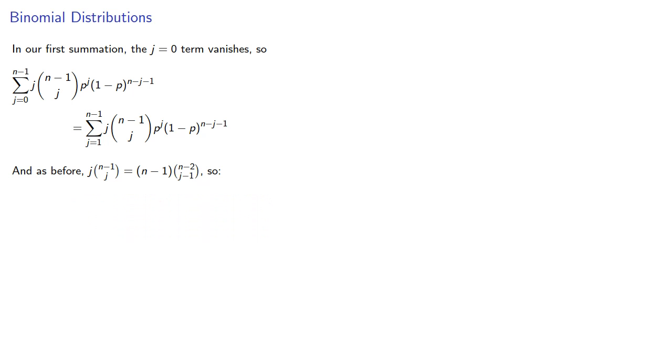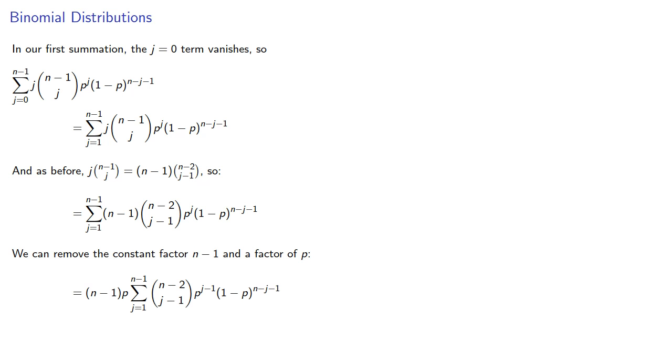So our summation becomes... and again n minus 1 is a constant factor, so we'll remove a factor of n minus 1 and another factor of p. And this series, if we re-index with k equals j minus 1, we get...